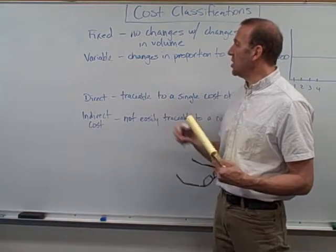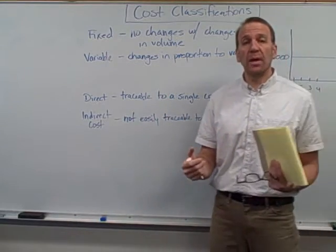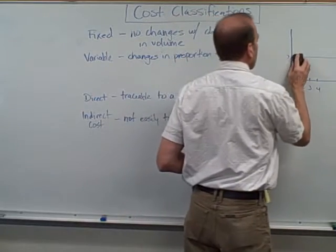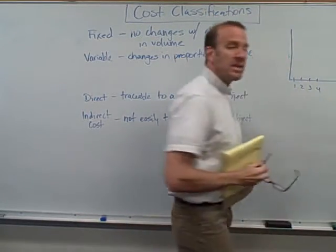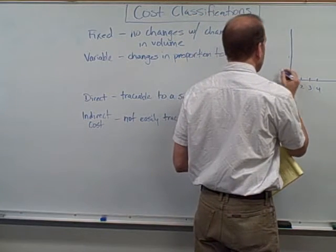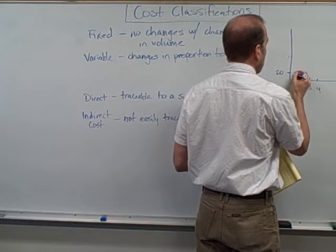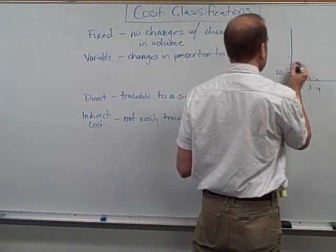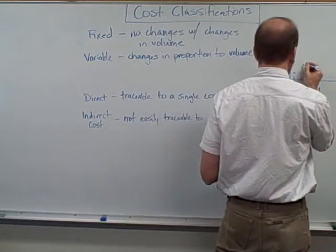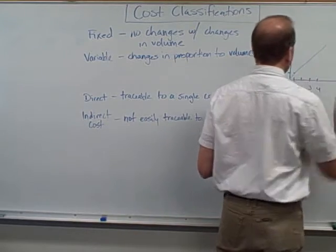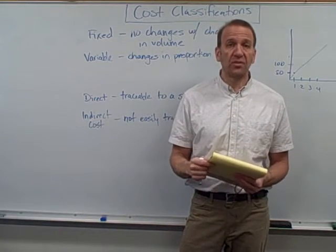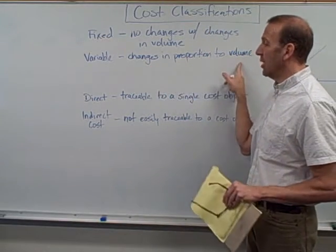Variable costs change in proportion to volume — meaning how many tables we're manufacturing. Let me change this scenario. Let's say the materials, the lumber that goes into these tables, costs us fifty dollars. If we manufacture one table we're going to incur fifty dollars. If we manufacture two tables, that'll require a hundred dollars worth of lumber. So you can see we've got a variable cost — every time we manufacture another table it's going to cost us fifty dollars more in materials.